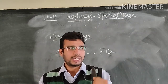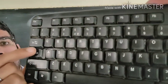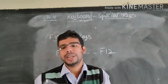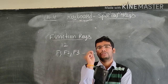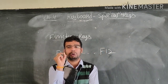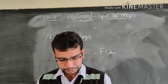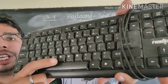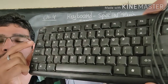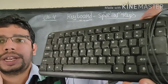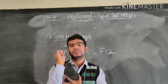Now, tab key. This is a tab key. It is above the Caps Lock key, and it is used to move ahead a few spaces at once. Tab key is used to move ahead a few spaces at once — similar to the spacebar key, but it moves more spaces at once.